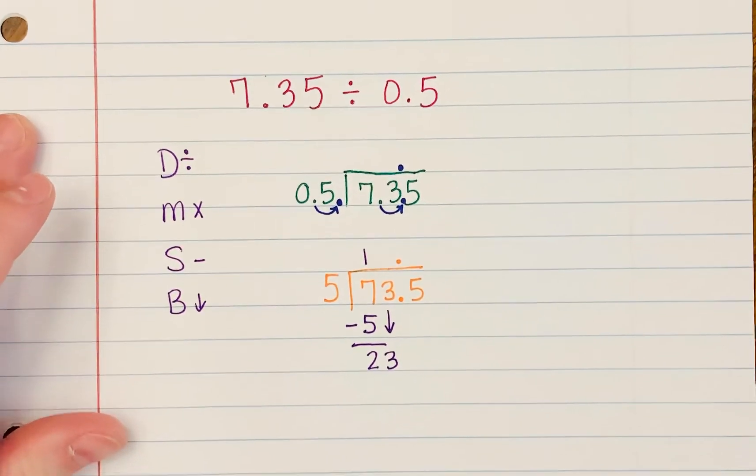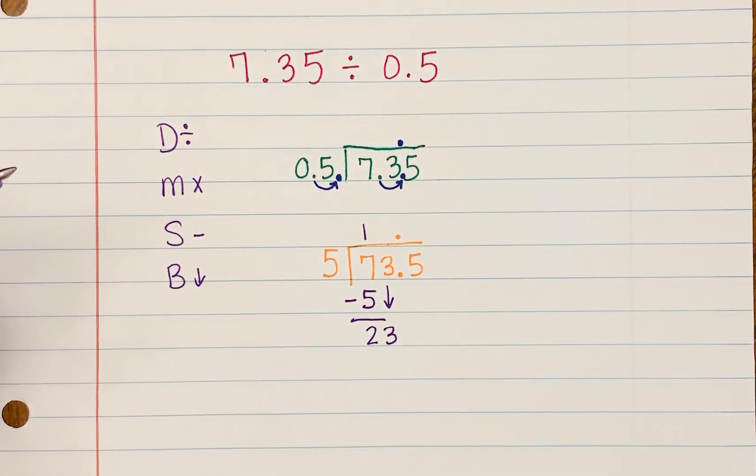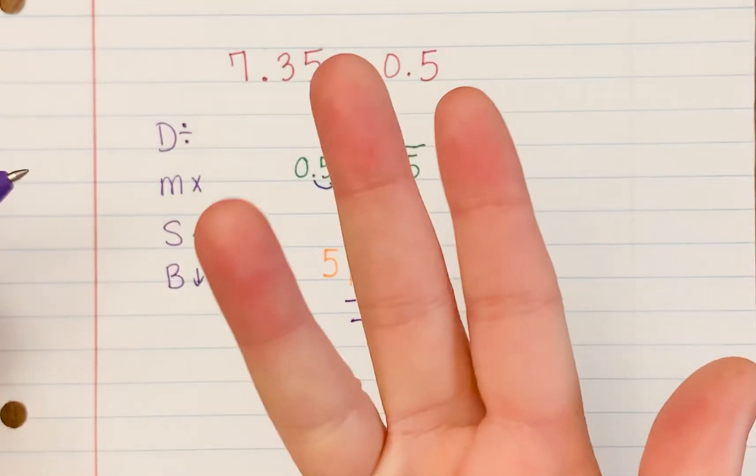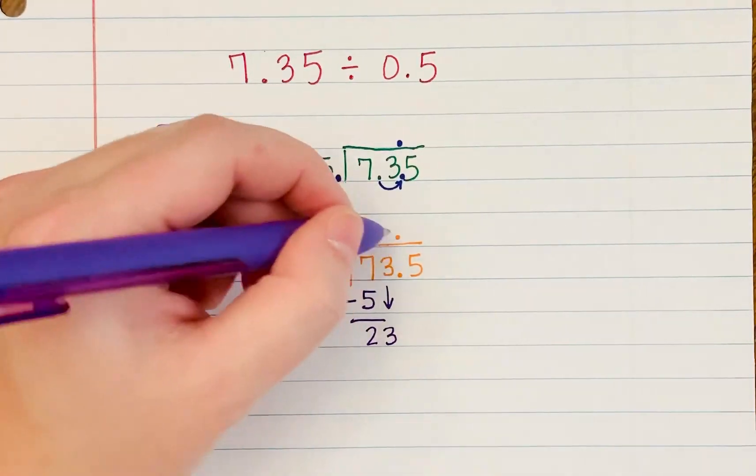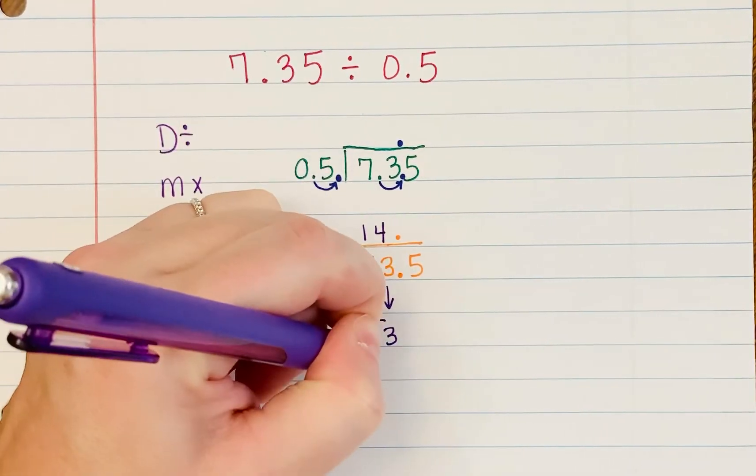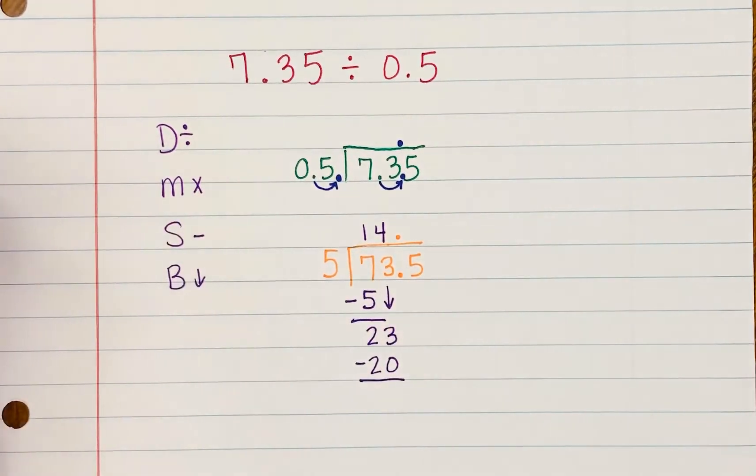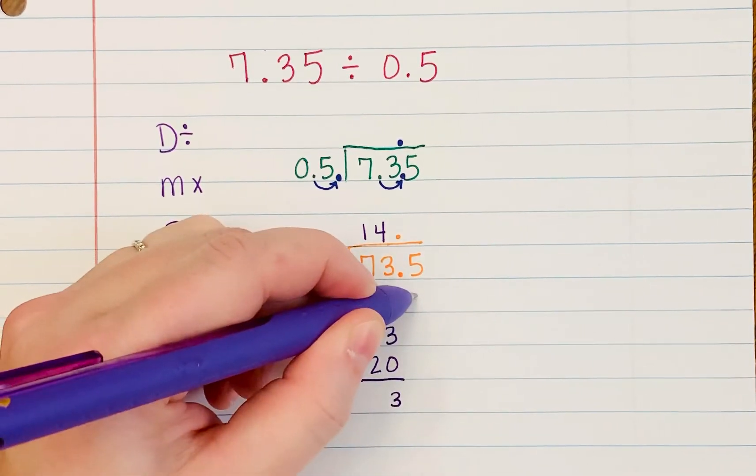Then you start the process over again. Now we want to see how many times five goes into 23. If you count by fives: five, 10, 15, 20, 25 is too much because we had 23. So it only went in four times. Multiply. Five times four gives me 20. Subtract. 23 minus 20 is three. And then bring down.